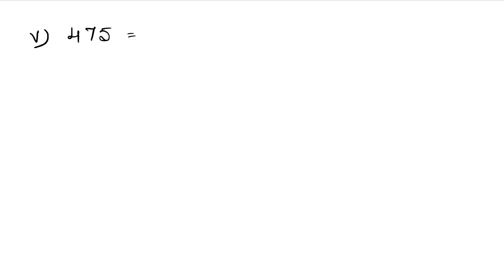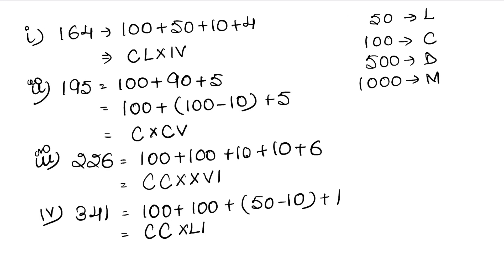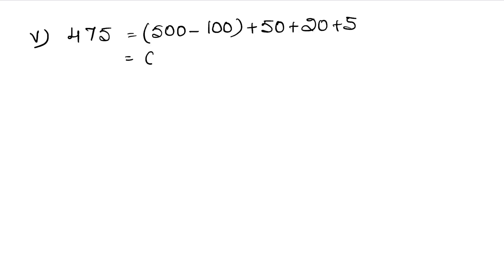Let's do the fifth part. The fifth part is 475. We write it as 400 plus 50 plus 20 plus 5. 500 is D, and to write 400 we write 100 minus 500, so that is CD. Then 50 is L, 20 is XX, and 5 is V. So the answer is CDLXXV.